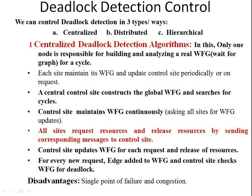We can control deadlock detection in distributed systems in three ways. The first type is centralized, the second is distributed, and the third is hierarchical. Centralized deadlock detection means only one point is responsible for all the functionality — just like a server.